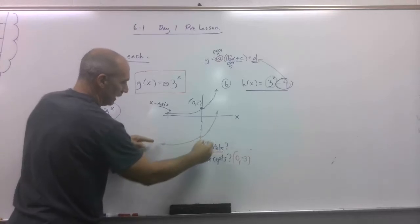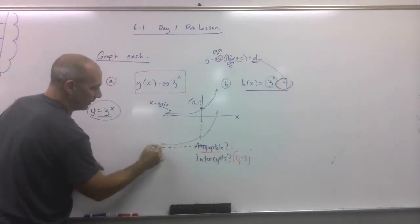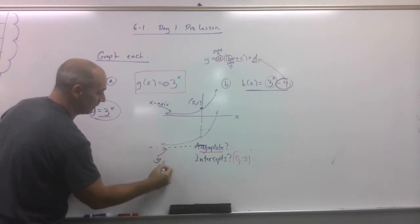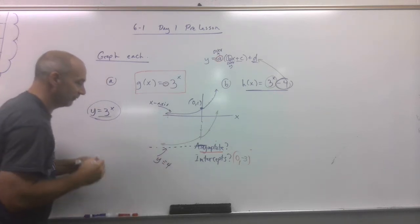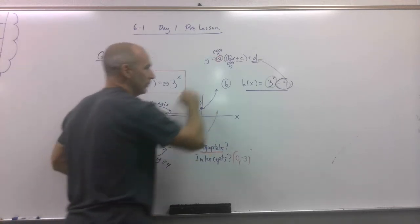So 1, 2, 3, and then down 4. And see, now that's what this is trying to reach, but it never will. Now what's the equation for that? Y equals negative 4. So that would be the asymptote of this black one, which is this.